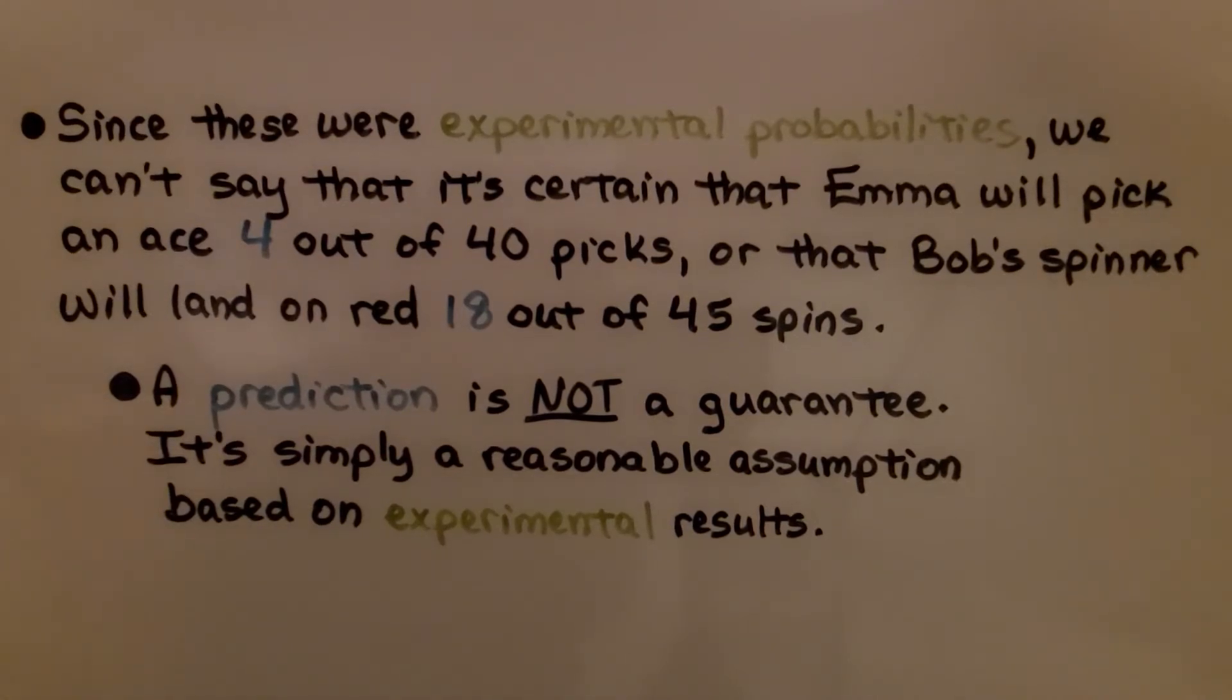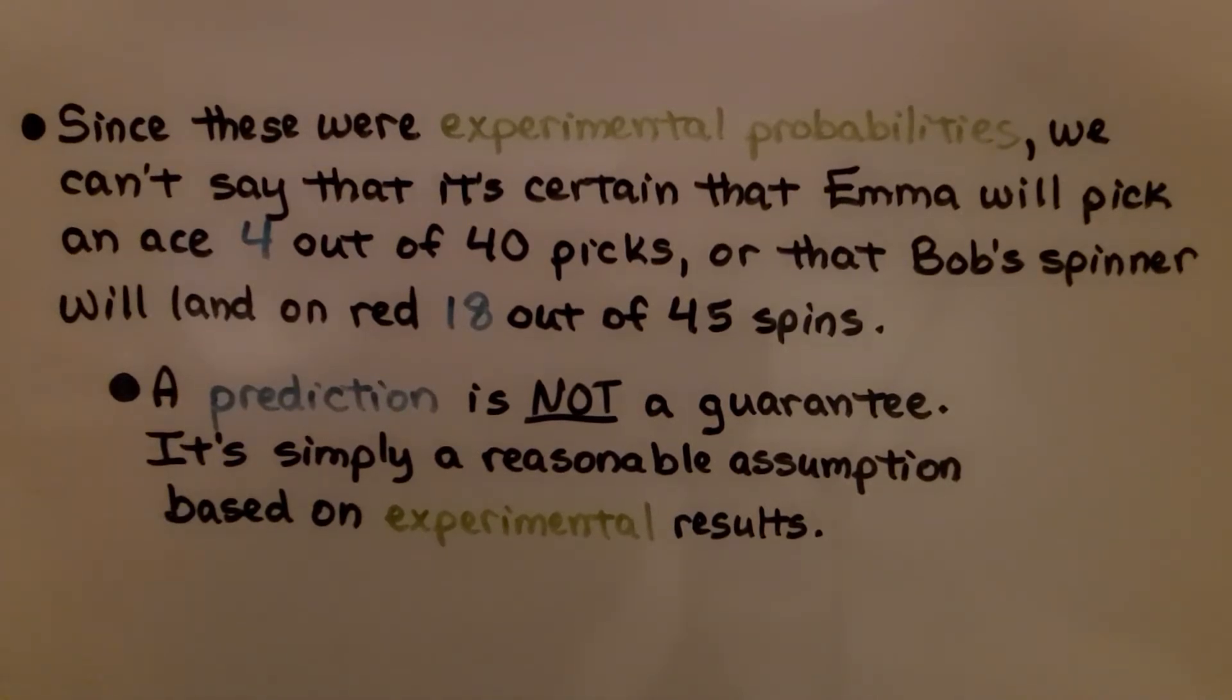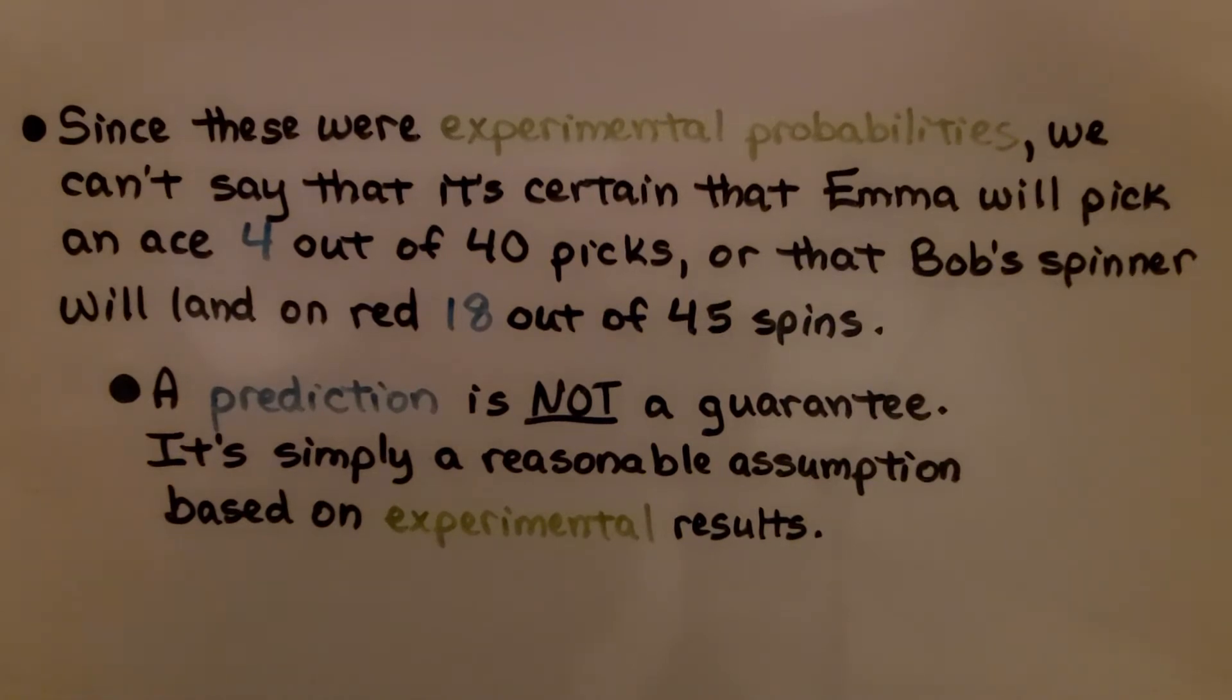Since these were experimental probabilities, we can't say it's certain that Emma will pick an ace 4 out of 40 picks, or that Bob's spinner will land on red 18 out of 45 spins. A prediction is not a guarantee. It's simply a reasonable assumption based on experimental results.